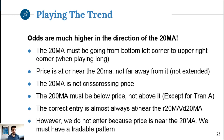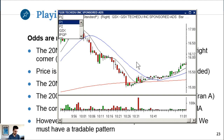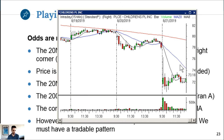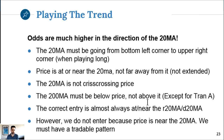The 20MA must be going from the bottom-left corner to the upper-right corner when playing long, and vice versa when playing short. Price should be at or near the 20MA - you don't want it too far away. If it's far away it's extended. The correct entry almost always originates off the 20MA. At the open, if it's a gap, the 20MA might not get there before the stock starts to go - that's precisely why I use the 8MA.